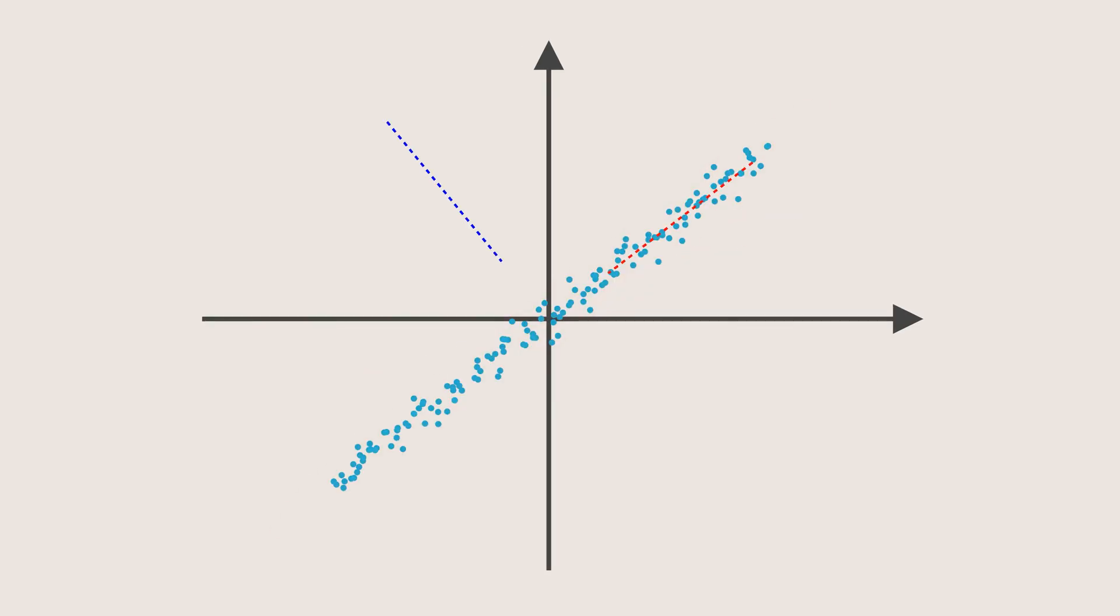Now for the 2D dataset I showed earlier in the video, it will look something like this. The red component captures most of the variance. We will keep the red one and drop the blue one.